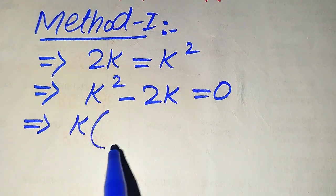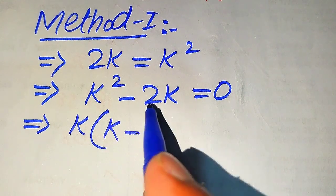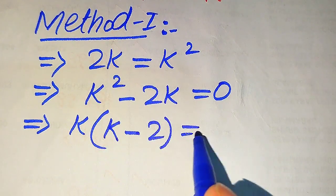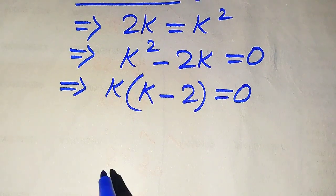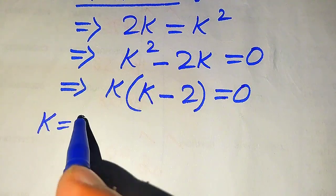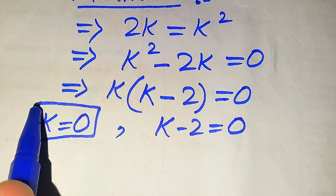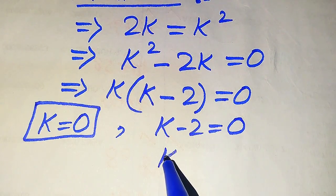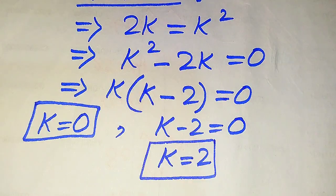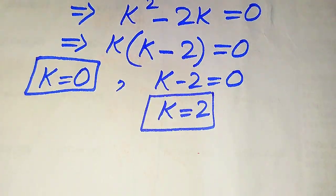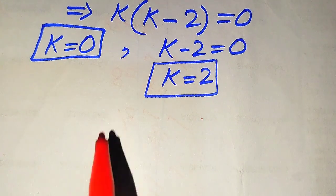From this equation we take K as a common factor, giving us K times (K minus 2) equals 0. We split this into two cases: the first case gives K equals 0, and the second case gives K minus 2 equals 0, so K equals 2. In the first method, we get two roots: 0 and 2.